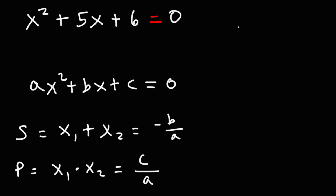So I'm going to write those two formulas right here. The sum is negative b over a, and the product of the two roots is c over a.